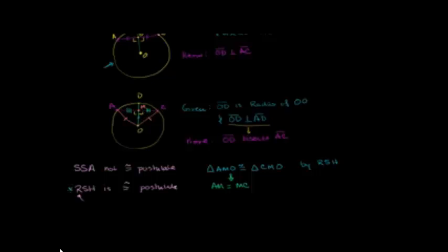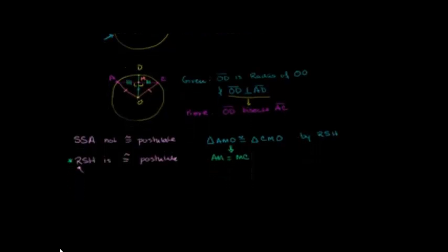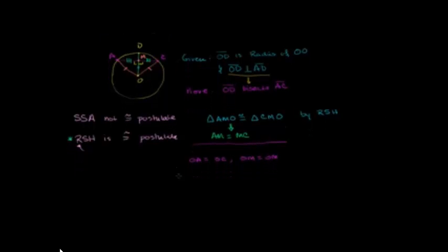Another way that we could have proven it without RSH is straight up with the Pythagorean theorem. We already know, just by setting up these two radii, that OA is equal to OC, and also that OM is equal to itself. From the Pythagorean theorem, for triangle AMO: AM squared plus OM squared is equal to OA squared — the squares of the two legs summed equals the square of the hypotenuse.